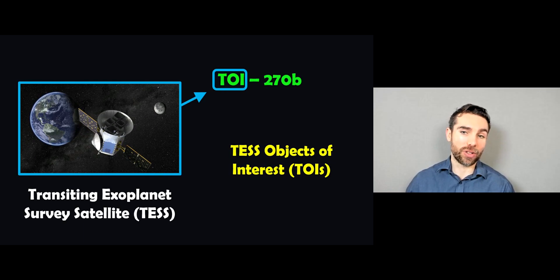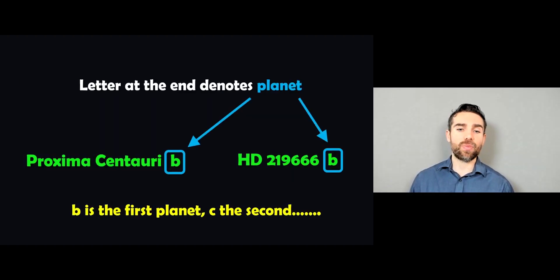So they're given a designation of TOI, which then requires the follow-up work. So then you actually have this name here. So TOI 270B would be a planet around that star.